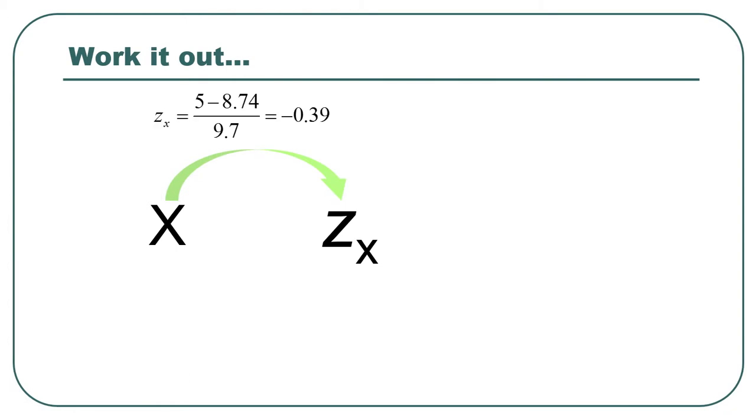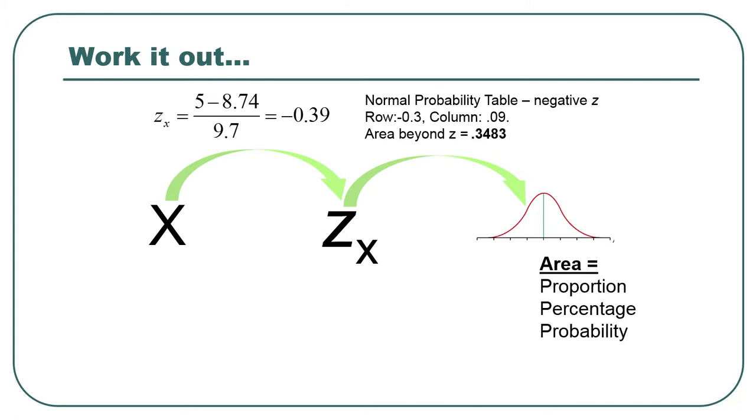Here we go. The z-score for 5, since it's below the mean, is negative 0.39. Now one thing that tells us immediately is that the probability is going to be greater than 0.5, right? If the z-score is to the left of the middle, but you want the probability to the right of that, well then everything to the right of the middle is going to be part of your probability. So it's going to be a fairly large probability.